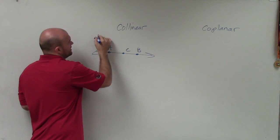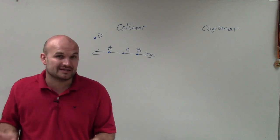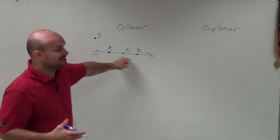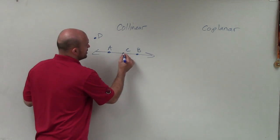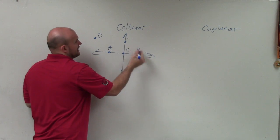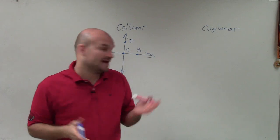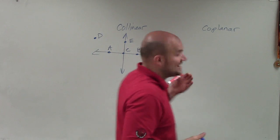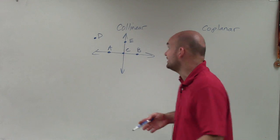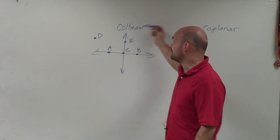However, if I put a point over here, you can obviously see that point D is not on the line. So therefore, point D is non-collinear, or not collinear with these other points. I could also draw another intersecting line, and let's call this point E. So you can say that A, C, and B are all collinear points — they all lie on the same line. However, point E is not collinear, does not lie on the same line.